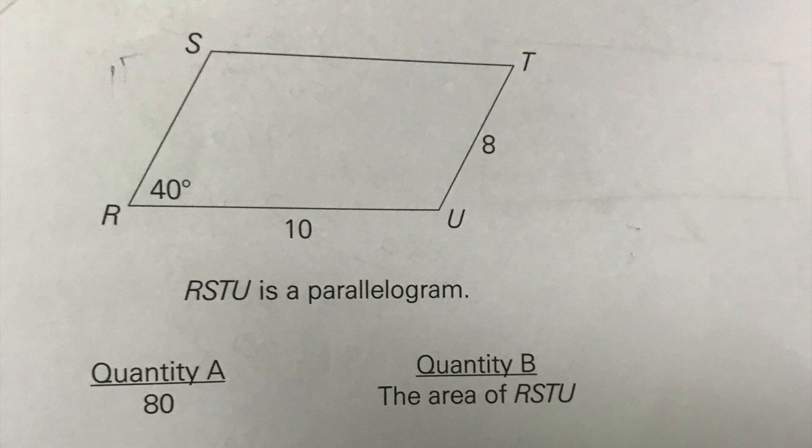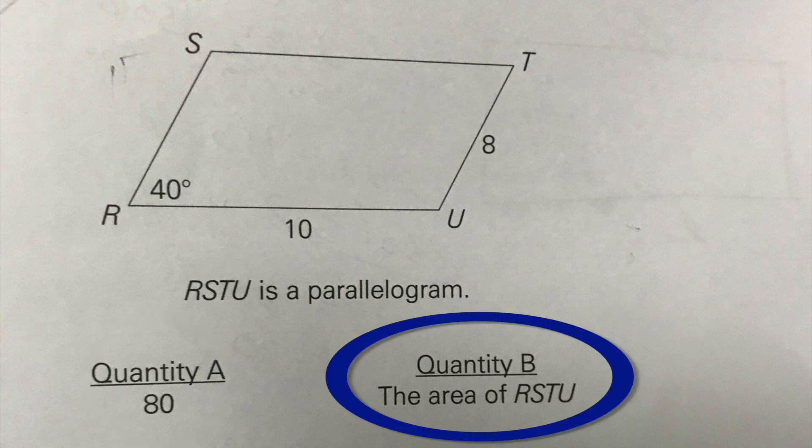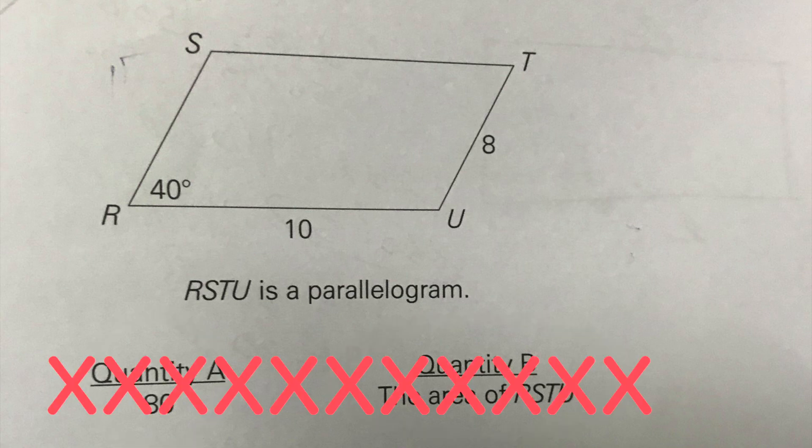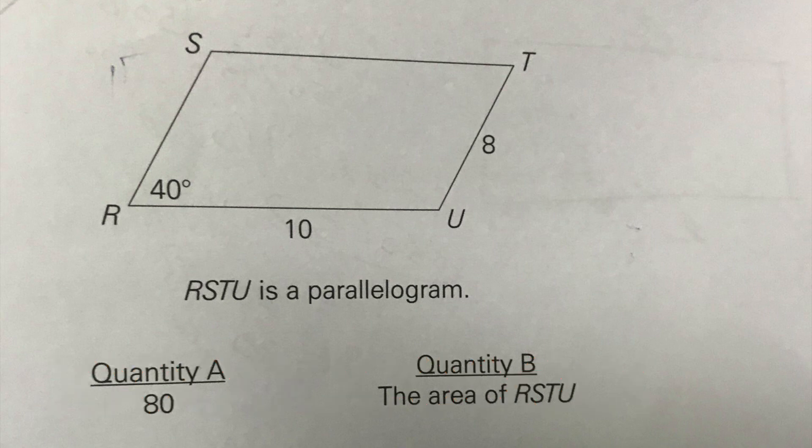All right, let's give this one a go. I saw this from some students and I thought it was a good one. Basically, A is the answer if quantity A is bigger, B is the answer if quantity B is bigger, C is the answer if both quantities are equal, and D is the answer if the data is not sufficient to determine which one's bigger. Give this one a shot on your own and then we'll do it together.